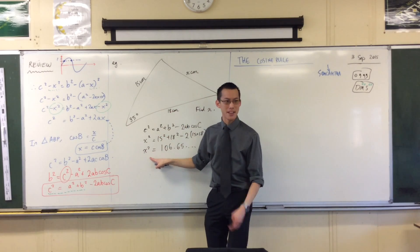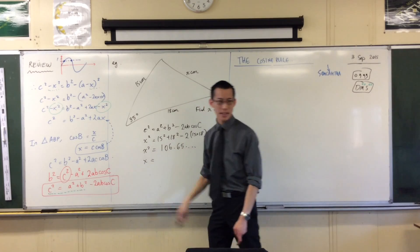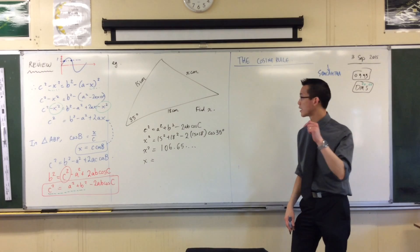Now, the reason why we're getting this ridiculous number is because it's not the length, it's the length squared. So, my next step is I have to take the square root of that number, and who's got it for me? Can we get one decimal place?